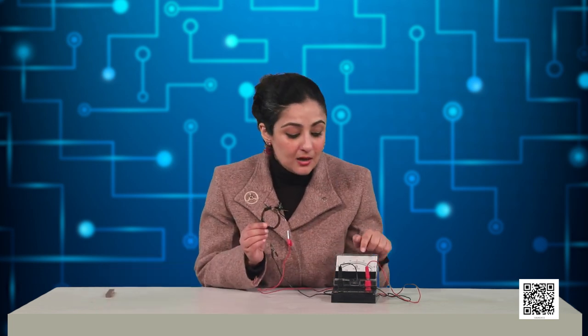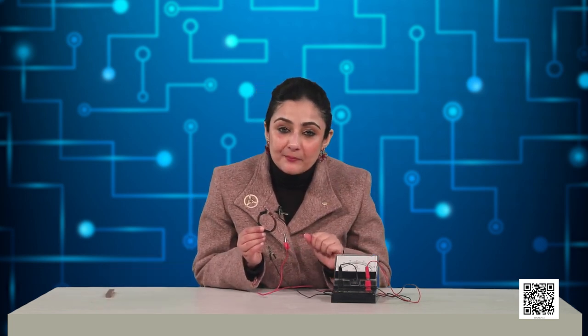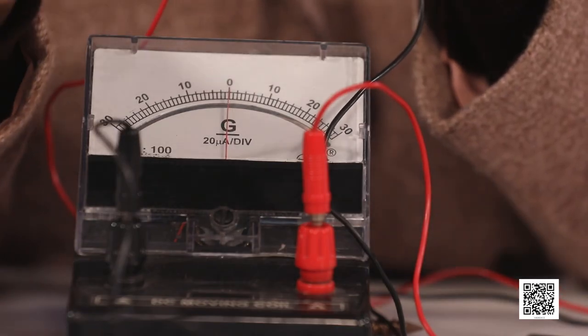You will observe a momentary deflection in the needle of the galvanometer on both sides of the zero. This indicates the presence of current in the coil AB. The deflection becomes zero the moment the motion of the magnet stops. It is thus clear from this activity that motion of a magnet with respect to a coil produces current.